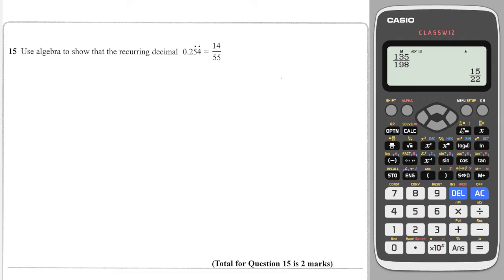OK, next question is very similar. Again, I write X is equal to 0.2545454545. There's two digits reoccurring. So I times by 100. And that is going to give me 25.454545454. And that's going to carry on.